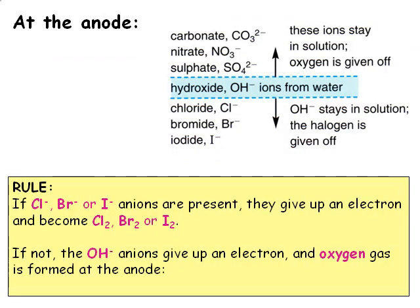There is a similar reactivity series for the negative ions at the anode. If the negative ion is less reactive than the hydroxide ions — which would be the case for chloride, bromide, or iodide ions — then the hydroxide ions stay in the solution and the other negative ion is oxidised to form an element. If the negative ion is more reactive than hydroxide ions, then they stay in the solution and the hydroxide ions are turned into the element oxygen and water molecules. In our example, chloride is less reactive than hydroxide ions, so the hydroxide ions stay in the solution and the chloride ions are oxidised to form chlorine gas, which appears at the anode as bubbles.